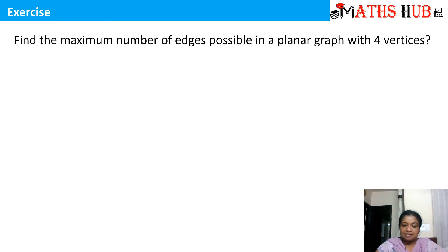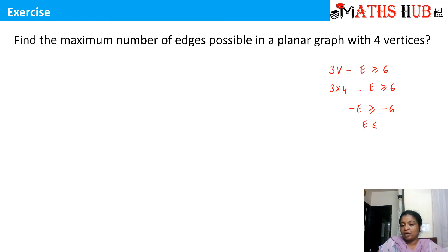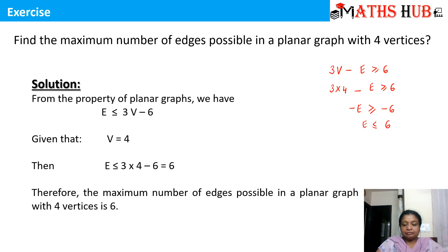Now let's come to an exercise: find the maximum number of edges possible in a planar graph with 4 vertices. We use the relation 3V minus E is greater than or equal to 6. With V = 4, we get 3×4 minus E ≥ 6, so 12 minus E ≥ 6, which gives minus E ≥ minus 6. Cancelling the negative, the inequality changes and we get E ≤ 6. So the maximum number of edges is 6.